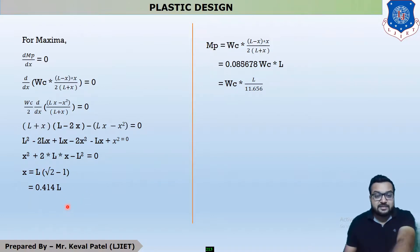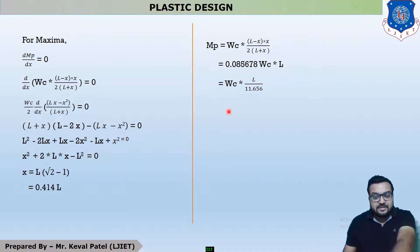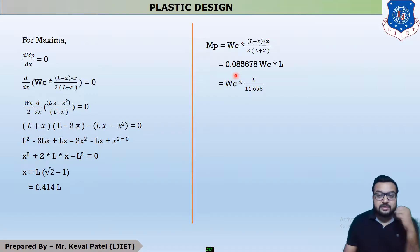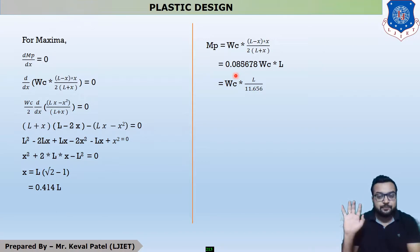Substituting x = 0.414L back into the MP equation gives: MP = WC·L / 11.656, where WC is the total collapse load in kilonewtons. If instead the UDL is given as small w in kN/m, substitute WC = w·L to get: MP = w·L² / 11.656.